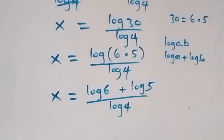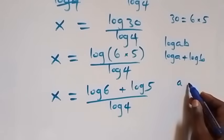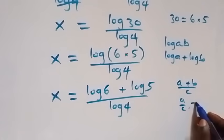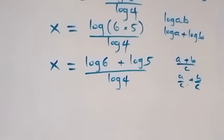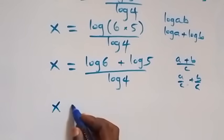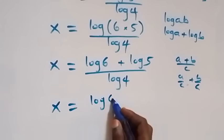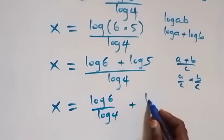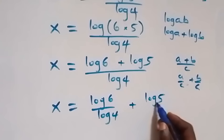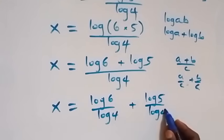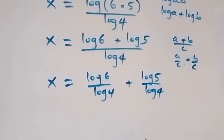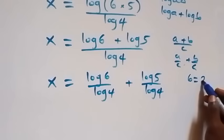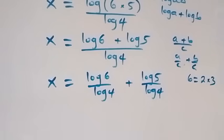We can separate this into two fractions, since (a plus b) over c equals a over c plus b over c. So what we have becomes x equals log 6 over log 4, plus log 5 over log 4.